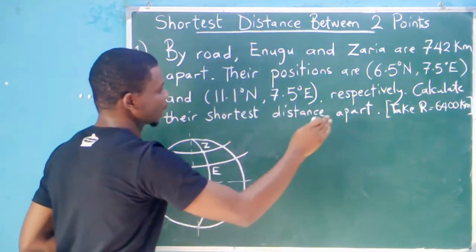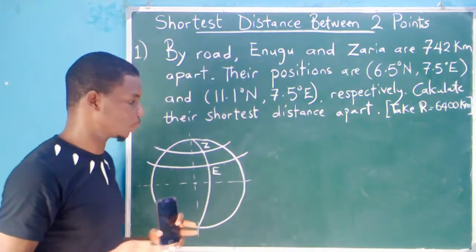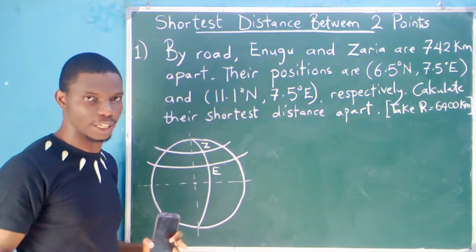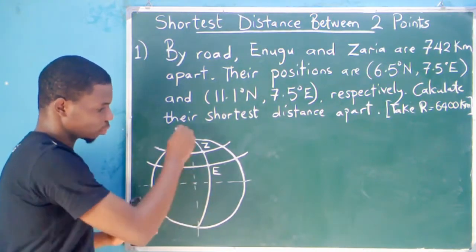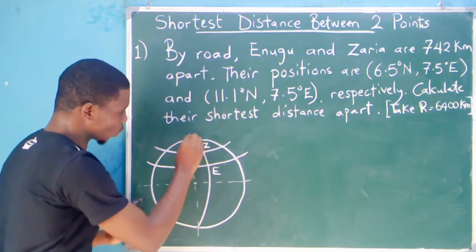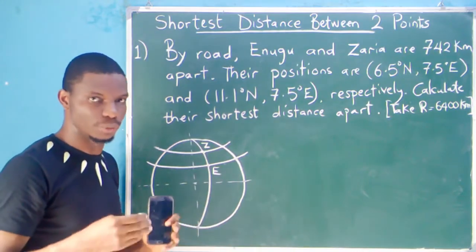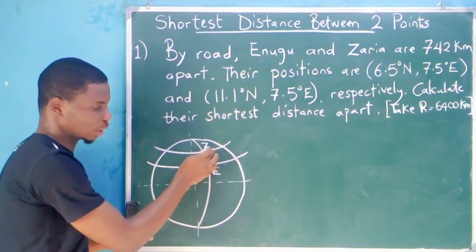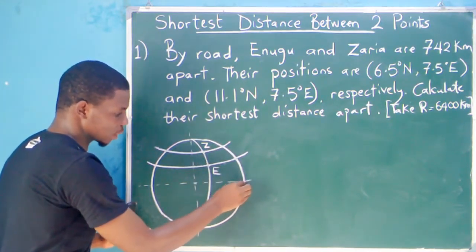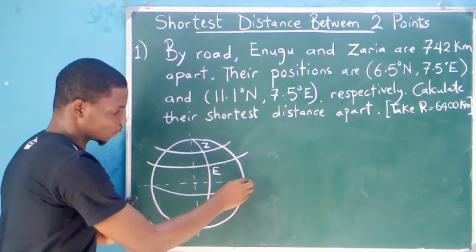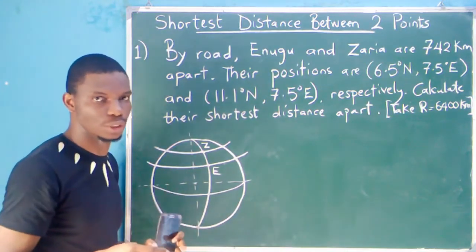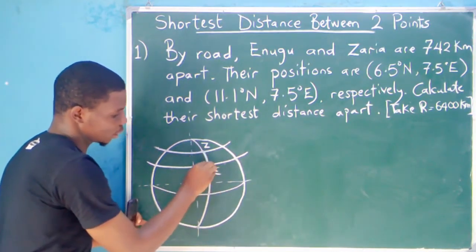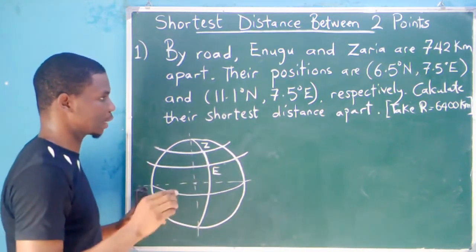Now we want to calculate the shortest distance apart. Anytime you are asked to calculate the shortest distance between two points, it is the distance along a great circle. A great circle is any circle on the earth that has the radius of the earth. All lines of longitude have the radius of the earth, so they are all great circles. For latitude, only the equator has the radius of the earth. So we are looking for the distance between Zaria and Enugu along this great circle — that will be the shortest distance between the two points.